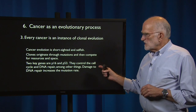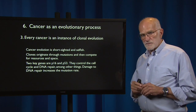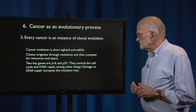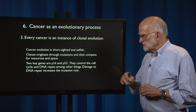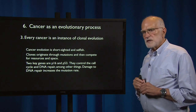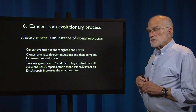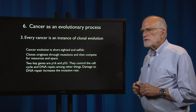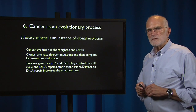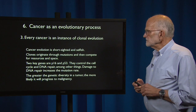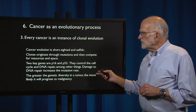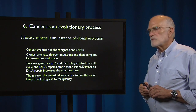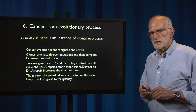Two of the key genes that are involved are P16 and P53. They control the cell cycle and DNA repair, among other things, and damage to DNA repair increases mutation rate. The greater the genetic diversity in a tumor, the more likely that it will progress to malignancy.